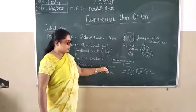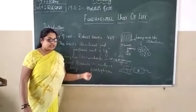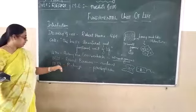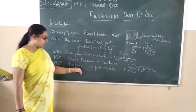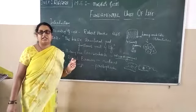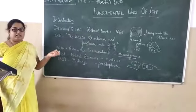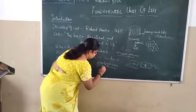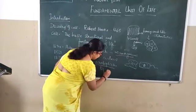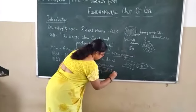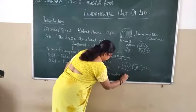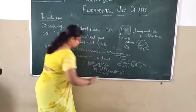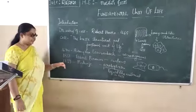The nucleus controls all the activities taking place inside the cell. And another scientist, in the year 1839 — scientist Purkinje — discovered the liquid material inside the cell. That liquid material he named protoplasm, a fluid liquid-like material in the cell.